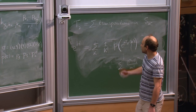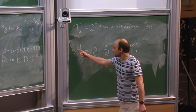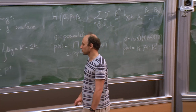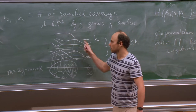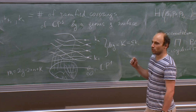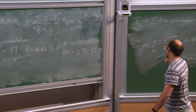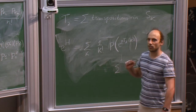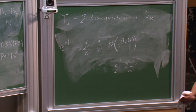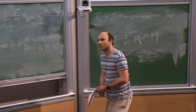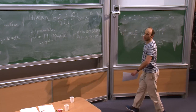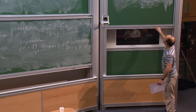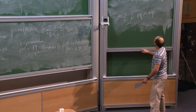One thing to note: I take the exponential of the generating function because when I take a product of transpositions, the ramified covering might not be connected. So this yields the generating series for possibly disconnected ramified coverings, which is exp(H). This is essentially the Burnside formula.